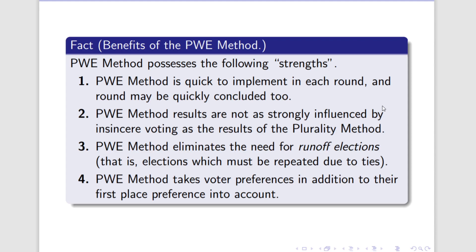PWE method eliminates the need for what are called runoff elections, which means you run an election, it turns out there's a tie, and so then you have to do another election to figure out who breaks the tie. PWE doesn't need that because we just conduct another round. PWE method also is better about taking voter preferences into account, much better than plurality method. Even though each round behaves like plurality, once we go from one round to another, we transfer votes. So that means we have to know something about voter preferences and we have to respect them. All of those are really great things.